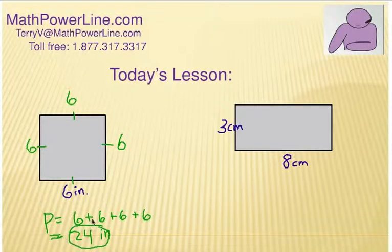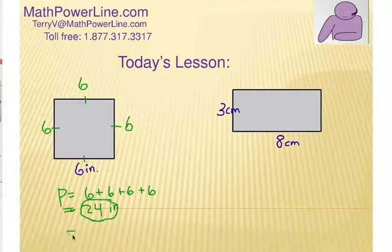Alright. Now, the shortcut, because it's a square, could also be four times the side that's measured. A lot of times you'll see the formula of P equals four S. That'll be squares. You have to have all four equal sides.